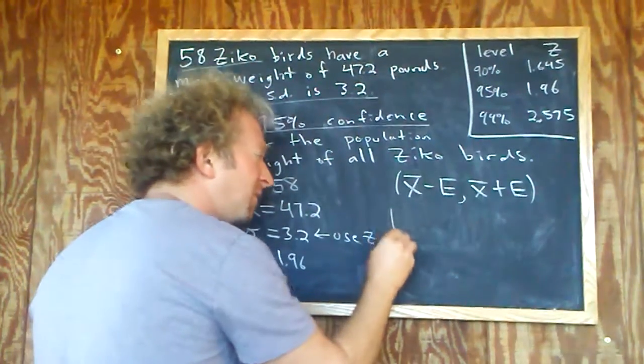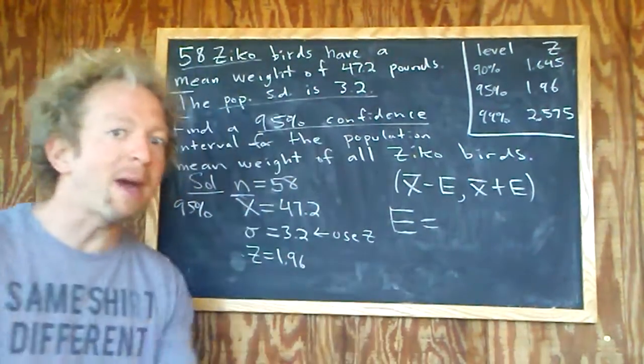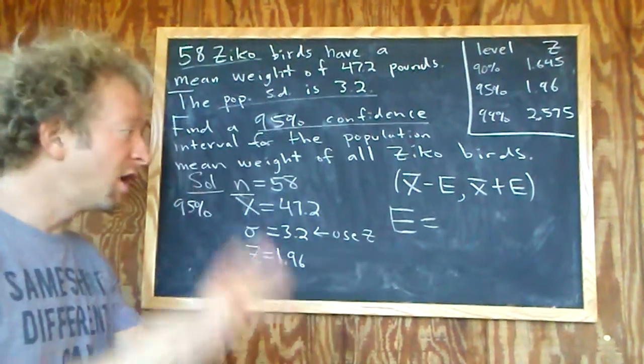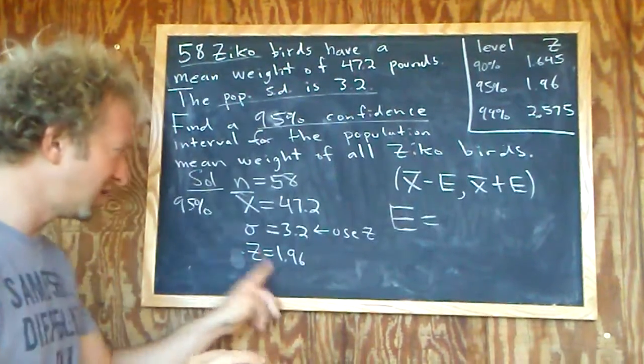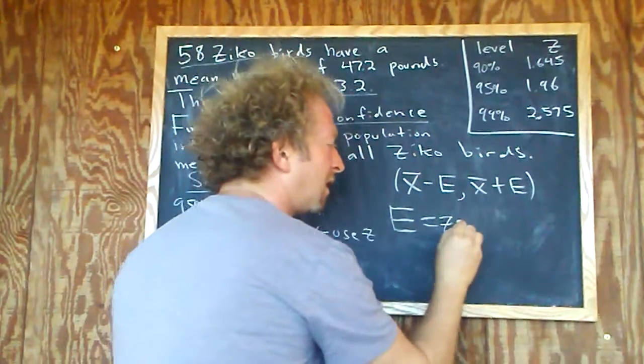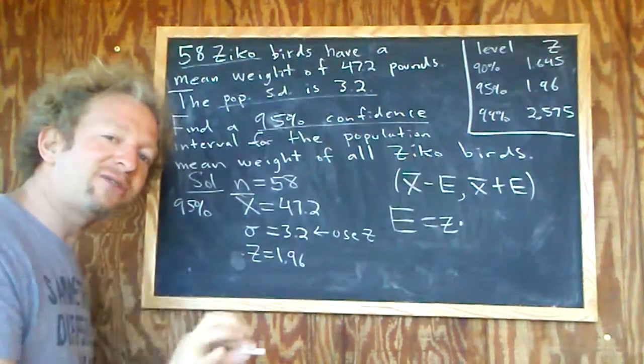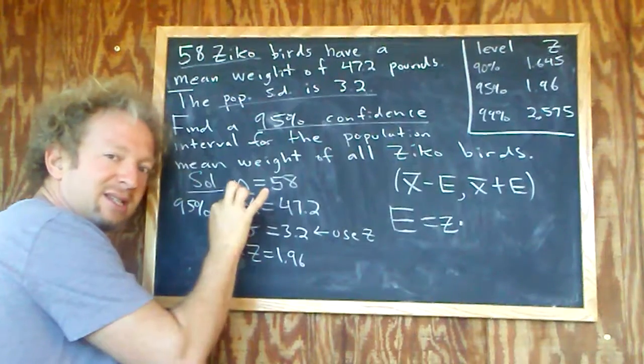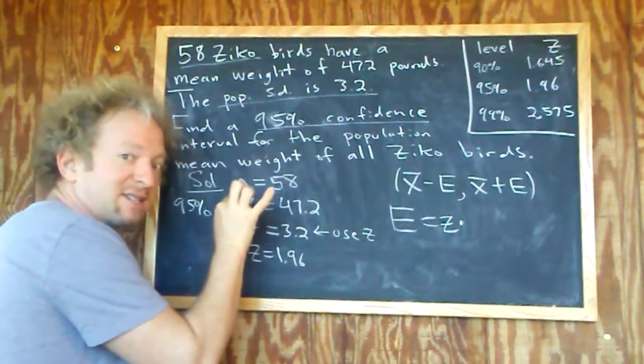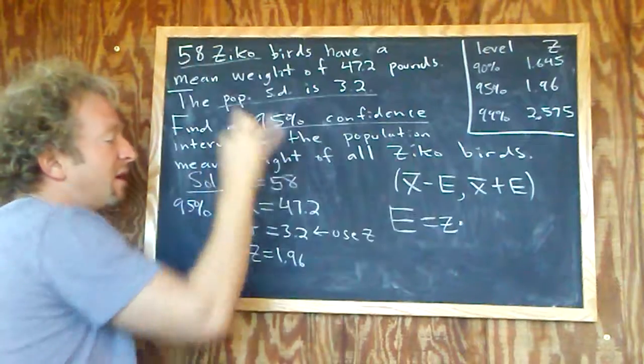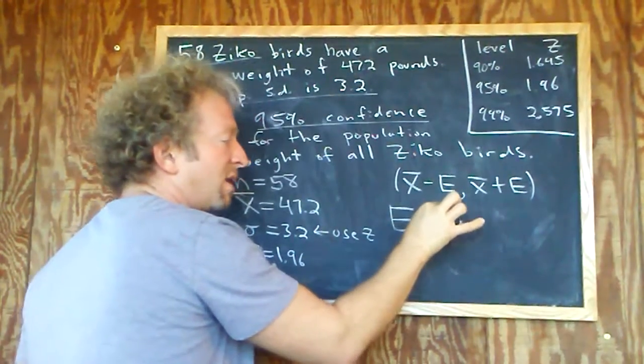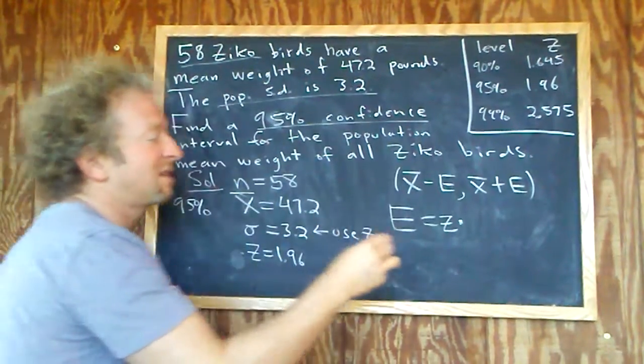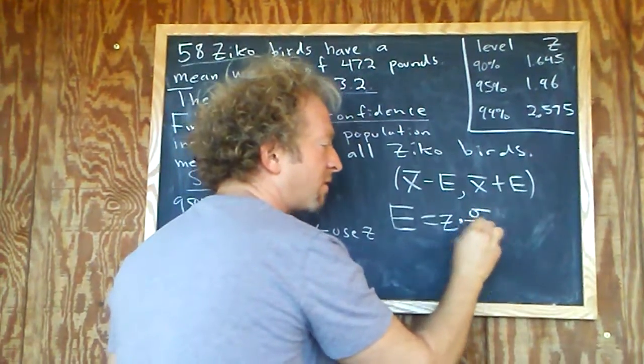What's e? E turns out to always be the same no matter what. If you open the back of a statistics book it's always the same: it's always the critical value, so in this case z, times the standard deviation of your statistic. In this case x-bar is called the statistic. A statistic is a number that tells you something about the sample. So e is always the critical value times the standard deviation of x-bar.